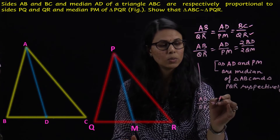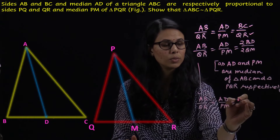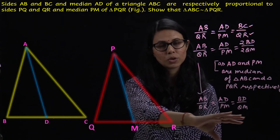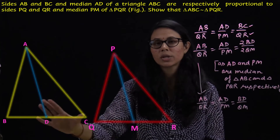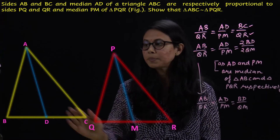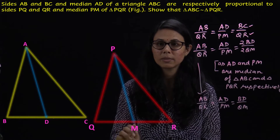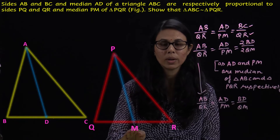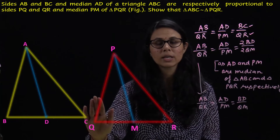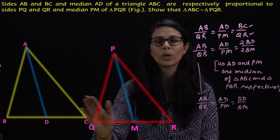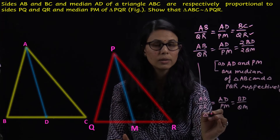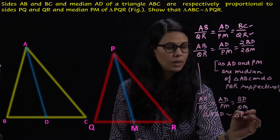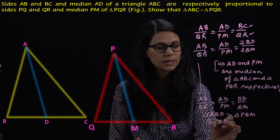So AB upon PQ is equal to AD upon PM is equal to BD upon QM. Now if we look at triangle ABD and triangle PQM, the three sides are in proportion: AB upon PQ is equal to AD upon PM is equal to BD upon QM. So we can say triangle ABD is similar to triangle PQM by SSS similarity.